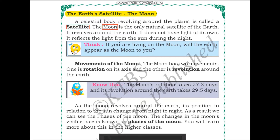The moon revolves around the Earth. It does not have any light of its own. So, how do we see the moon at night? This is because it reflects the light from the sun during the night. That is why we are able to see the moon.